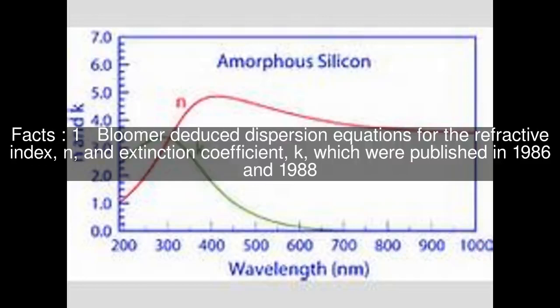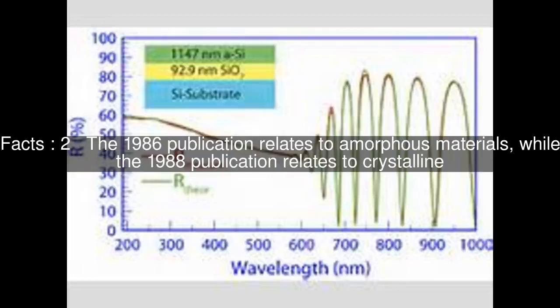Bloomer deduced dispersion equations for the refractive index, n, and extinction coefficient, k, which were published in 1986 and 1988. The 1986 publication relates to amorphous materials, while the 1988 publication relates to crystalline.